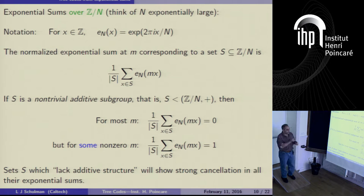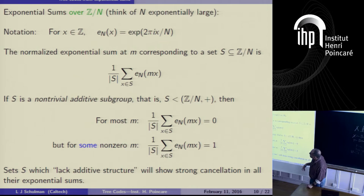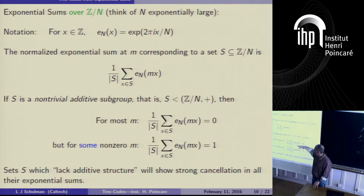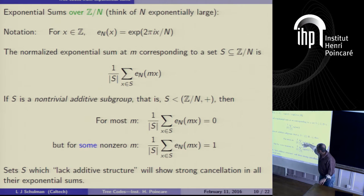In general, if a set doesn't have additive structure — an additive subgroup has as much additive structure as possible — then all the Fourier coefficients corresponding to values of m will all be small; you'll see nice cancellation in all of them. That's the general phenomenon. N can be either prime or composite — we'll actually be using composite.